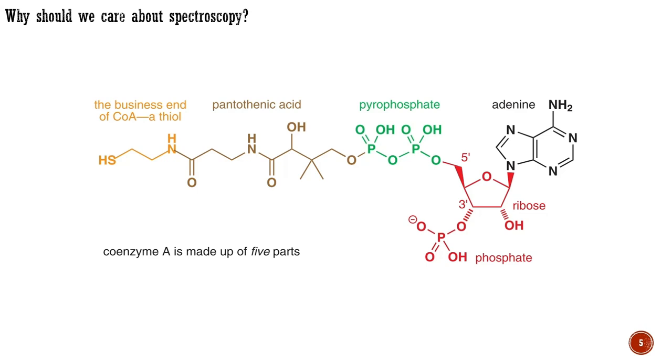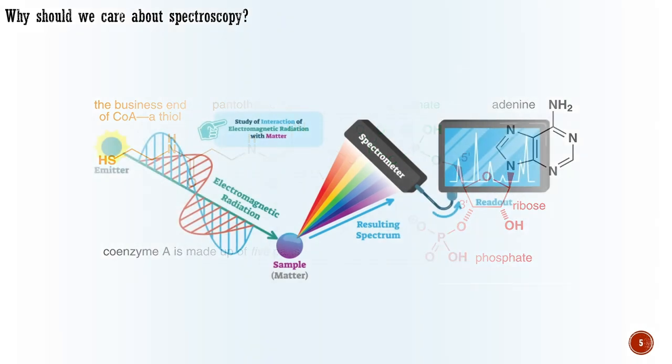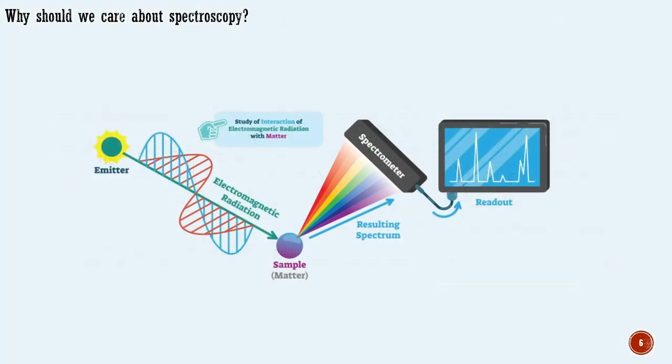We needed analytical techniques that work with tiny samples and that do not damage the sample in any way. For these reasons, qualitative tests and chemical degradation have given way to instrumental methods of structure determination. As diverse as these techniques are, all of them are based on the absorption of energy by a molecule, and all measure how a molecule responds to that absorption. While describing spectroscopic techniques in this course, the emphasis will be on their application to structure determination.